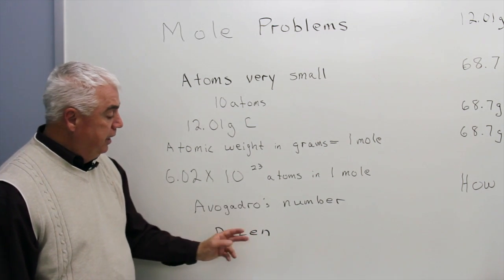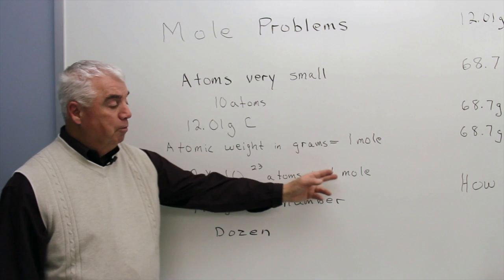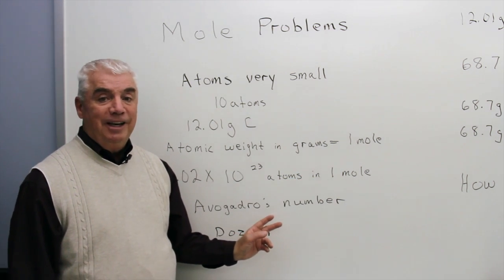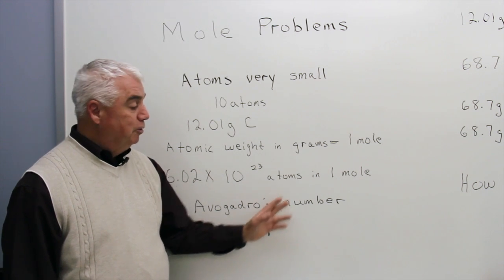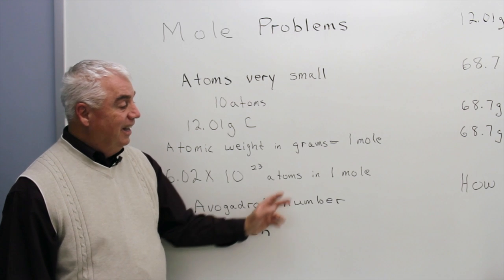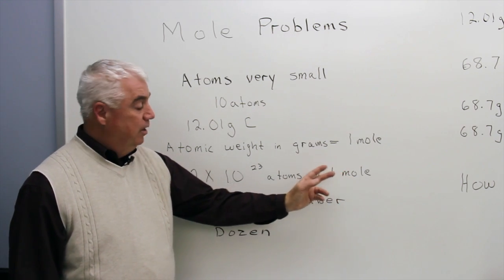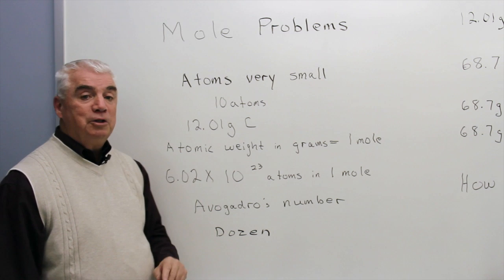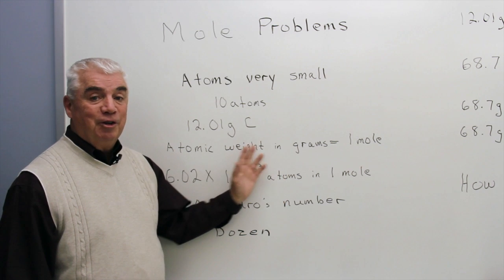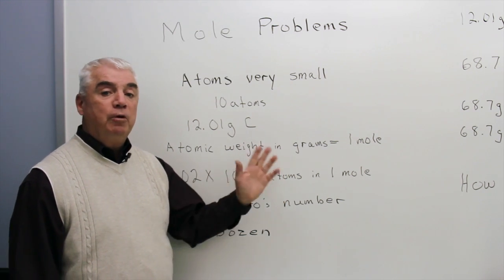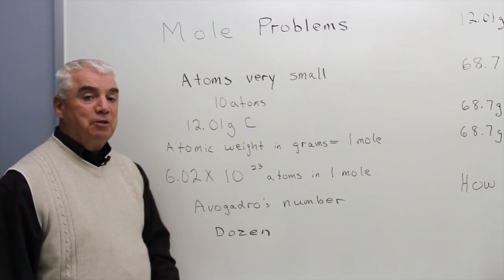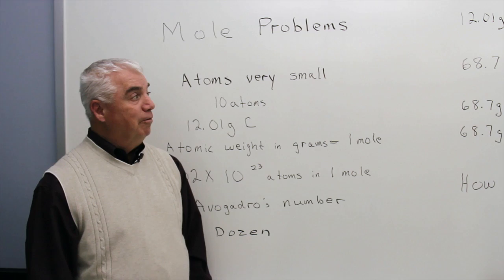I like to use the analogy of the word 'dozen' for mole sometimes. If we were to talk about a dozen — whatever it is, oranges or chairs or students — we'd be talking about the number 12. And if we talk about one mole of something, we're talking about 6.02 times 10 to the 23rd somethings. Could be chairs, could be atoms, molecules — whatever it is we're talking about. If there's one mole, there's 6.02 times 10 to the 23rd of those.